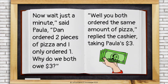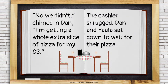'Now wait just a minute,' said Paula. 'Dan ordered two pieces of pizza, and I only ordered one. Why do we both owe $3?' 'Well, you both ordered the same amount of pizza,' replied the cashier, taking Paula's $3. 'No, we didn't,' chimed in Dan. 'I'm getting a whole extra slice of pizza for my $3.'